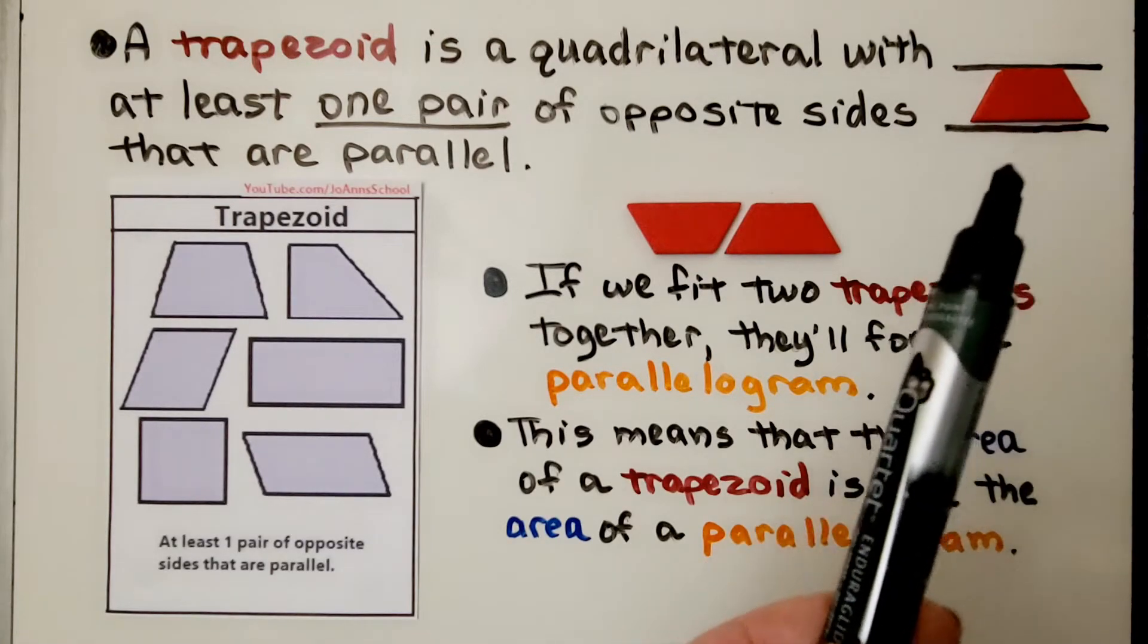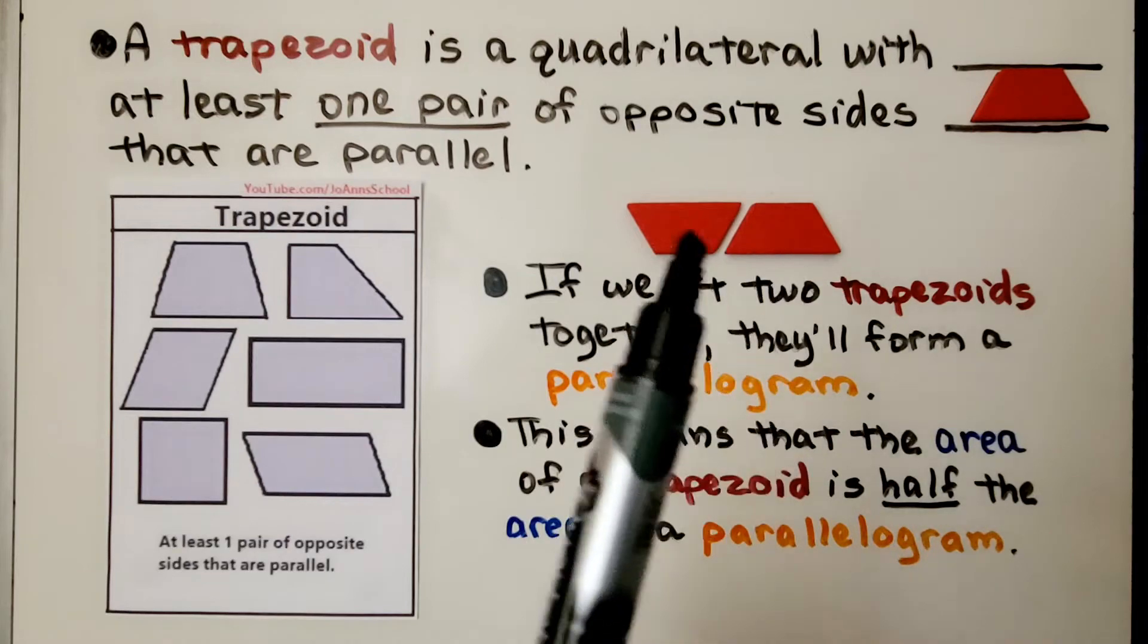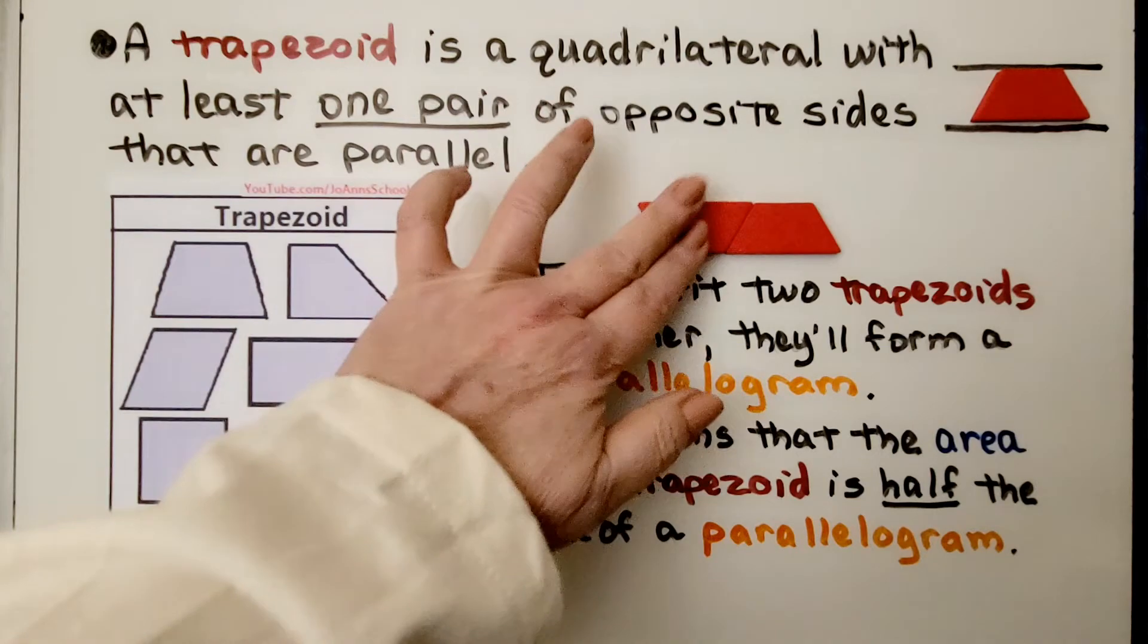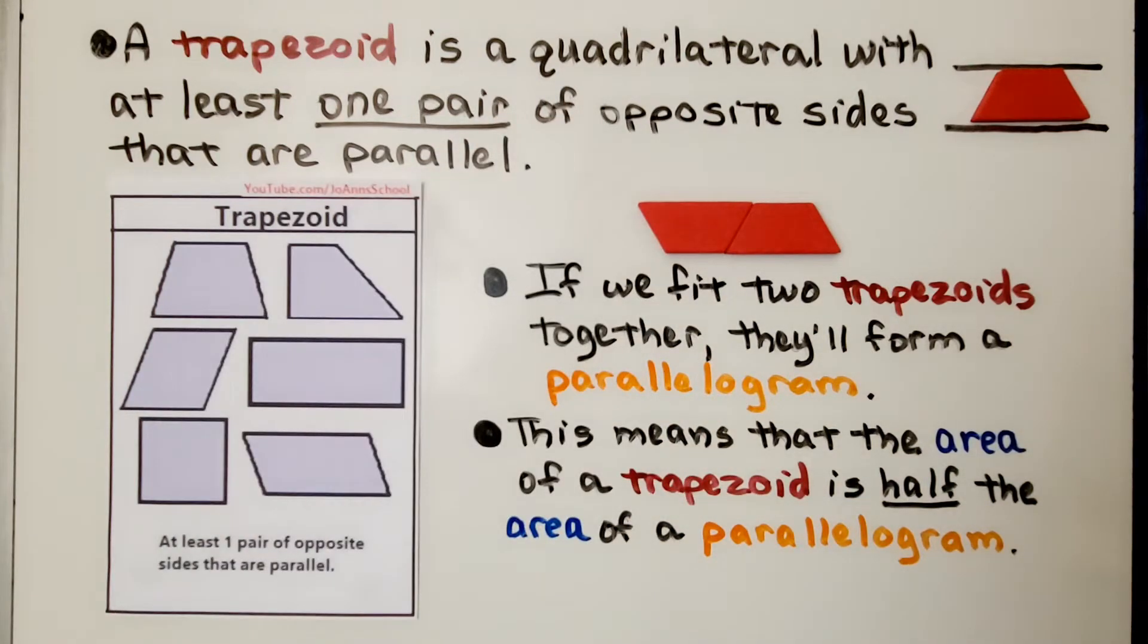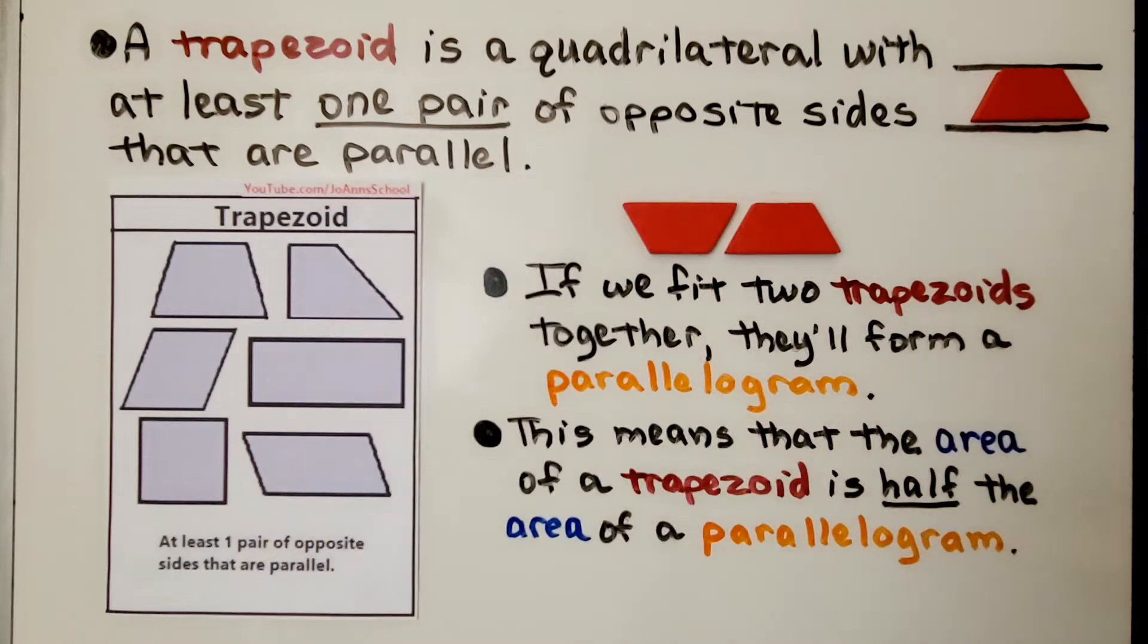So here, the top and the bottom, those sides are parallel. If we fit two trapezoids together, they'll form a parallelogram. This means that the area of a trapezoid is half the area of a parallelogram.